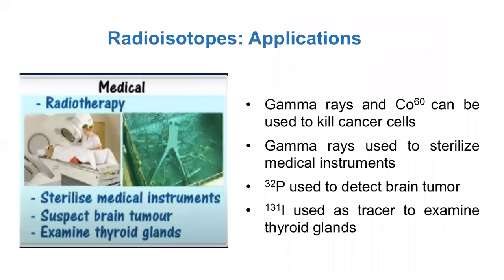Moving on to the applications of these radioactive isotopes: radiotherapy, sterilizing medical instruments, and helping to trace or identify early stages of tumor growth — phosphorus-32 is especially used for this. For radiotherapy, cobalt-60 is used to kill cancer cells. Gamma rays are used for sterilization of medical instruments, and iodine-131 serves as a tracer element to identify abnormalities in the thyroid gland.